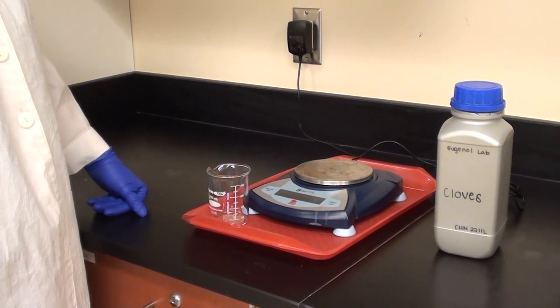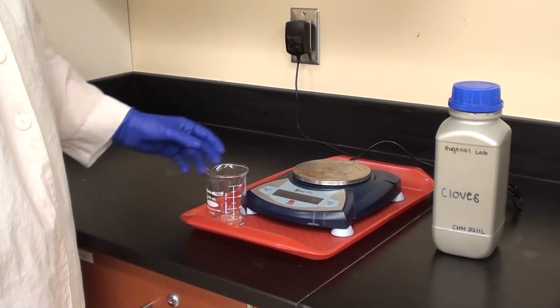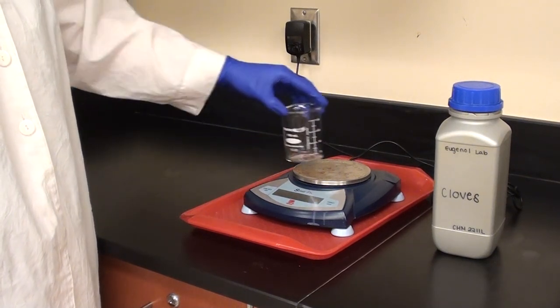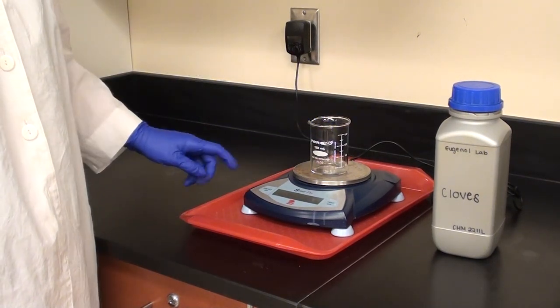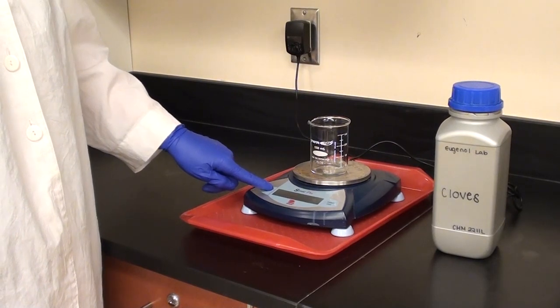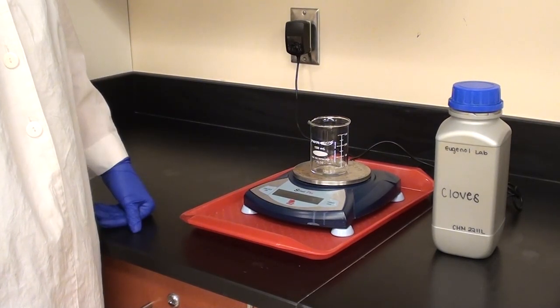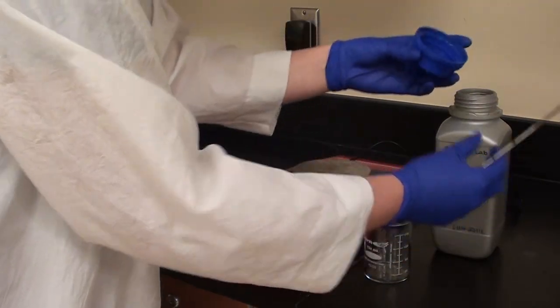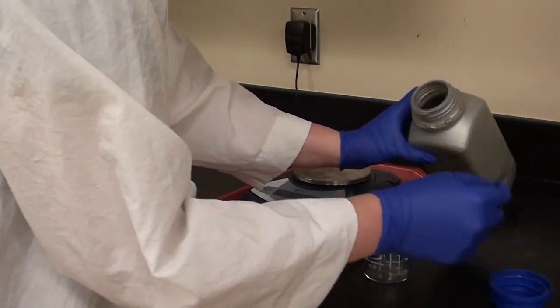We're going to weigh out the cloves here, and we're going to weigh them off the balance. She's zeroing out the beaker here, and she takes it off the balance, and now she adds the cloves. She's going to put a fairly small amount in to begin with.